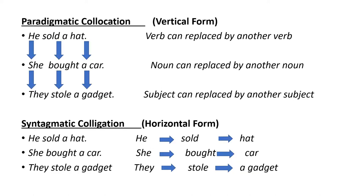Here you can see a diagram to understand the difference between paradigmatic collocation and syntagmatic colligation. Paradigmatic collocation is in vertical form — 'He sold a hat,' coming from top to down. We analyze the relationship of words in a semantic sense. For example: 'He sold a hat,' 'She bought a car,' 'They stole a gadget.' A verb can be replaced by another verb, a noun by another noun.